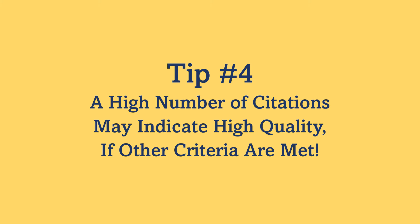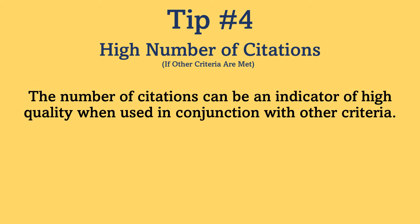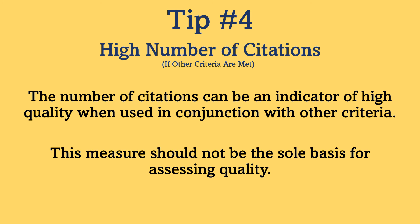Tip number four: a high number of citations can indicate high quality only if other criteria are also met. The number of citations — the number of times an article has been referenced by other resources — can be an indicator of high quality when used in conjunction with the other criteria we have discussed. However, this measure should not be the sole basis for assessing quality. An article published in a reputable journal with a high number of citations is usually perceived as a high-quality article. However, a low number of citations does not necessarily mean low quality. For example, a recently published article does not have enough time to receive a large number of citations. So citations can be used as a supporting factor if the paper meets the other three criteria discussed in this video.